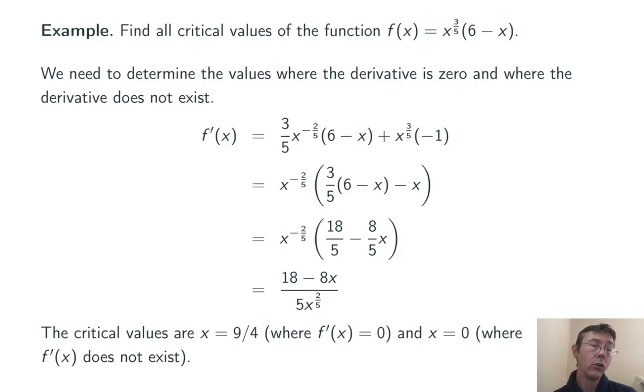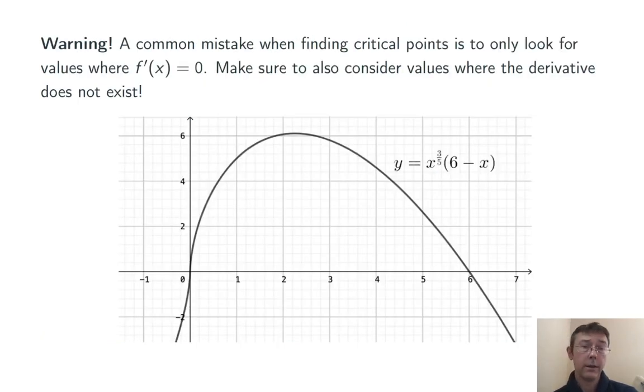Let's conclude by taking a look at the graph of this function to see what it's doing at those critical values. So, at x equals 0, we can see that we have a vertical tangent line. Notice that this is the graph of a function. It does pass the vertical line test, but it can also have a vertical tangent at x equals 0. And that's a candidate for a local max or min, even though it isn't a max or min in this particular case. Finally, we can see that other critical value there at 9/4ths. And in this case, we do have a local maximum for this function.